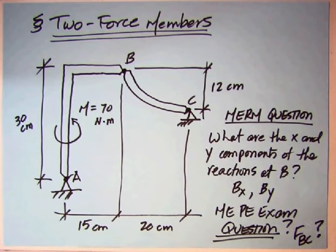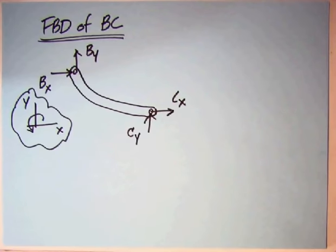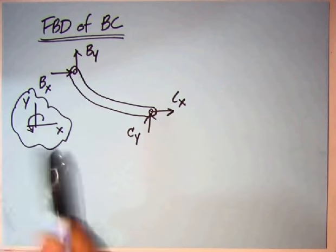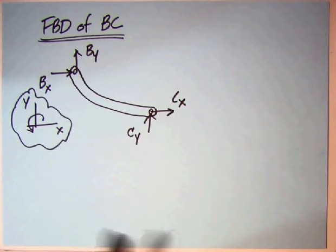But I think the MEP exam question is going to be: what is the force in member BC? Because they are going to expect you to realize that BC is a two-force member. So let's take a little bit different look at member BC. I have separated member BC with its own free body diagram, and I have put on the pin forces at B and C, both in the positive direction.